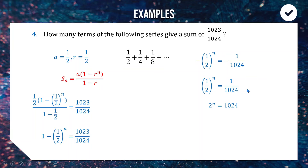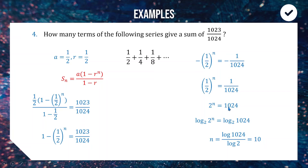Taking log base 2 of both sides: n = log₂(1024). Typing log(1024)/log(2) into the calculator gives 10, confirming 2^10 = 1024. So the first 10 terms of this geometric series add to give 1023/1024.